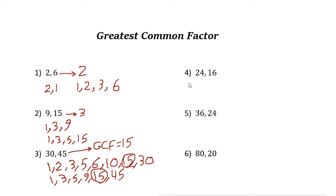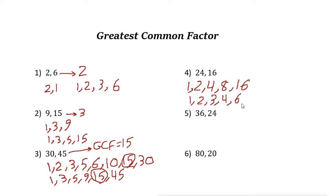For 16 and 24: the factors of 16 are 1, 2, 4, 8, and 16. The factors of 24 are 1, 2, 3, 4, 6, 8, 12, and 24. The biggest number they have in common is 8, so the greatest common factor of 16 and 24 is 8.